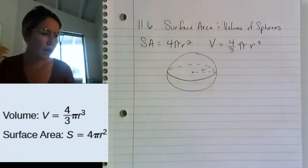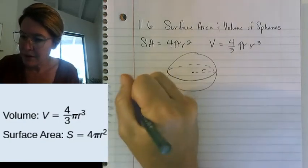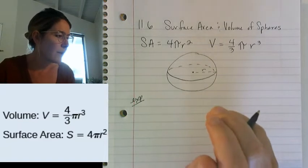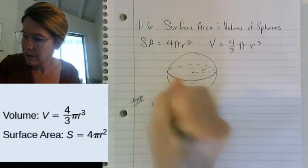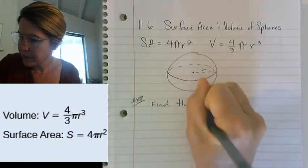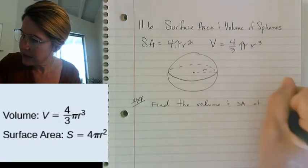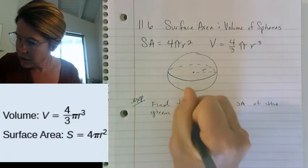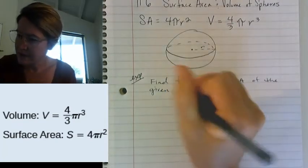And basically, we're just plugging and chugging for the most part. So for example, if we wanted to find the volume and surface area of the given circle, or I'm sorry, given sphere.